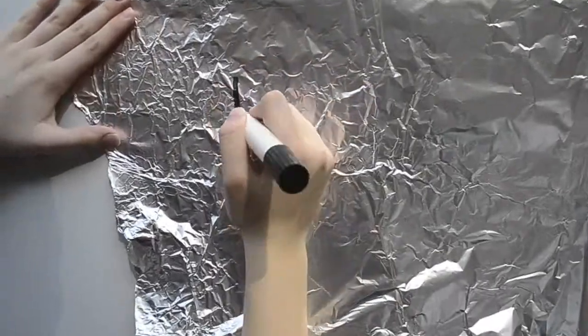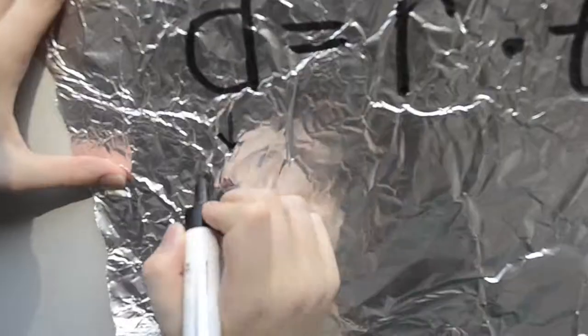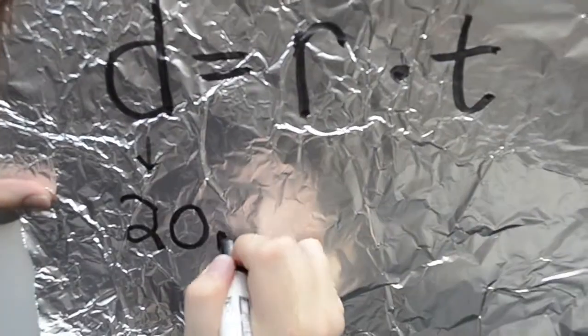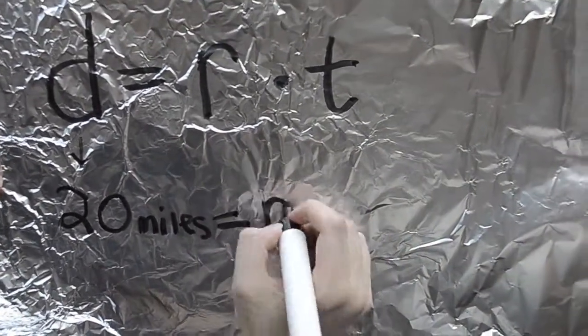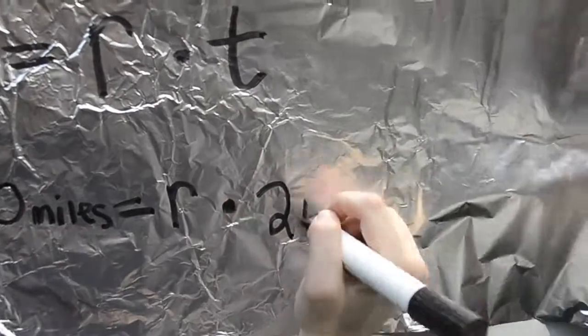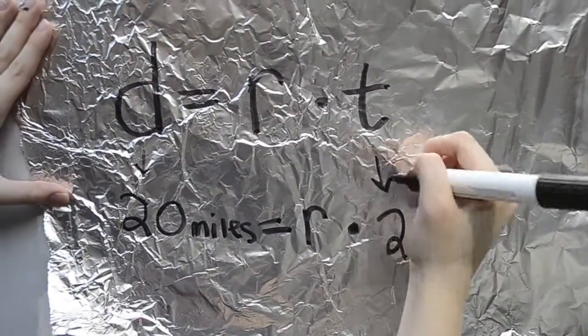What is the rate at which Lizzy runs? The distance is 20 miles and we're trying to find the rate, multiplied by 2 hours, since I ran 20 miles in 2 hours.